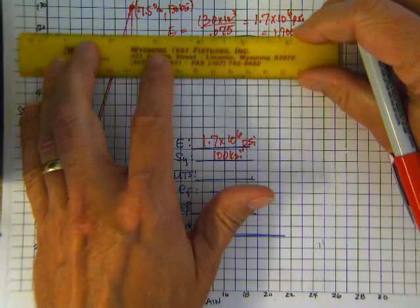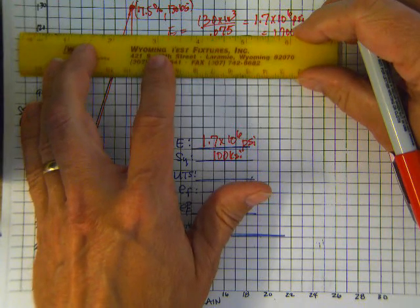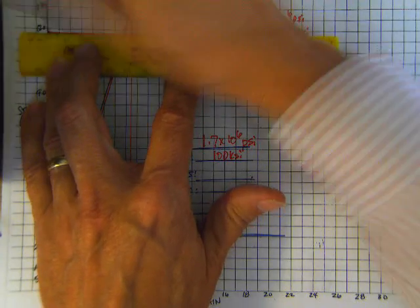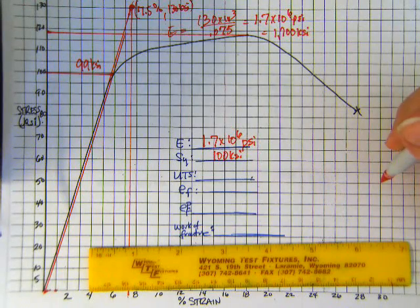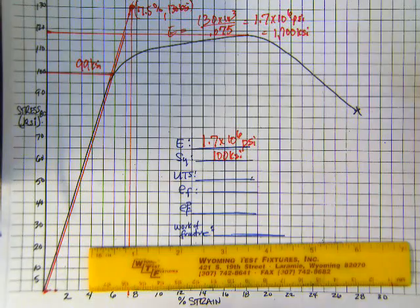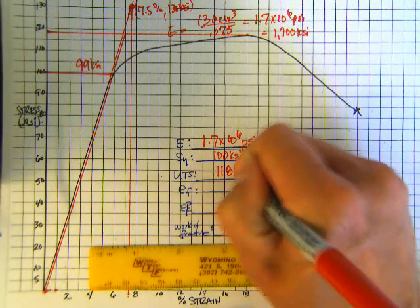My ultimate tensile strength will be the stress that causes necking in tension. And so that looks to be in the order of 118 or so, 117. I'm going to say 118 KSI.